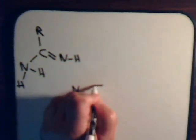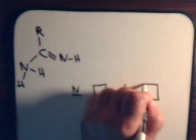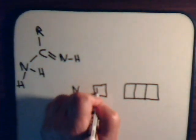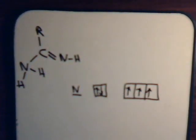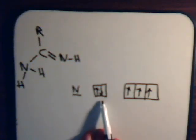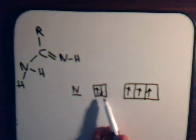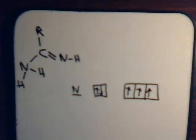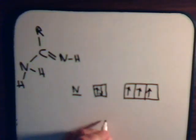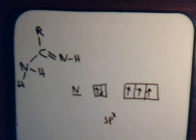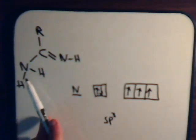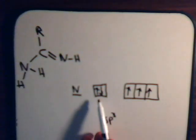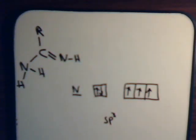Here's nitrogen and its orbital block diagram. If it is sp3 hybridized, then the 2s orbital and the three 2p orbitals all merge together, as we discussed in previous videos, to give us four equivalent sp3 molecular orbitals that form the corners of a tetrahedron. We would have three single electrons available to form three single bonds, and then there would be a lone pair of electrons in one of these sp3 orbitals. That's true.